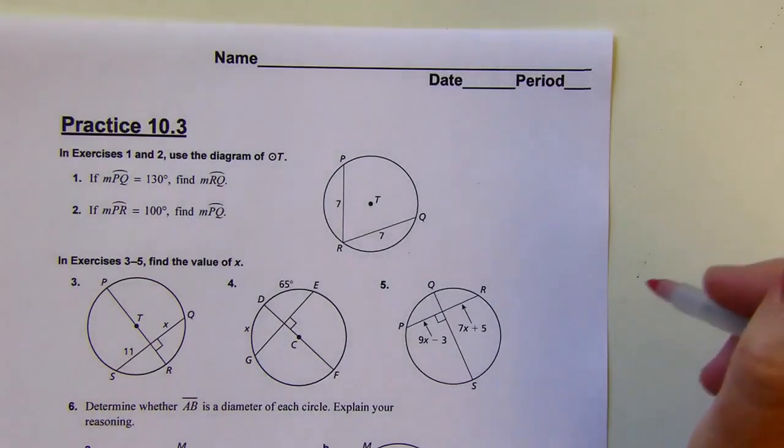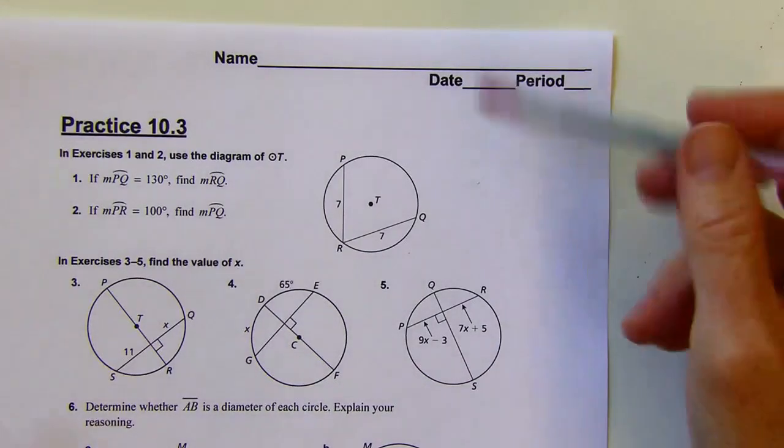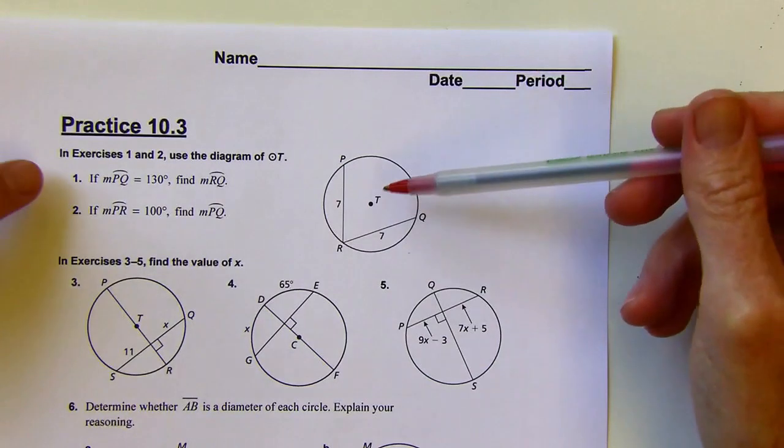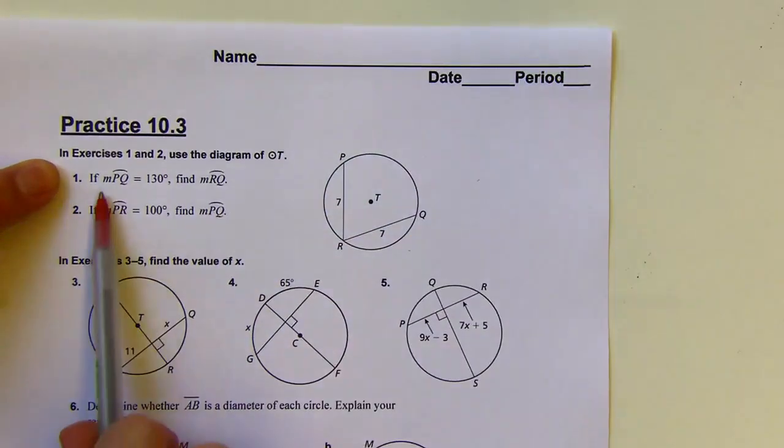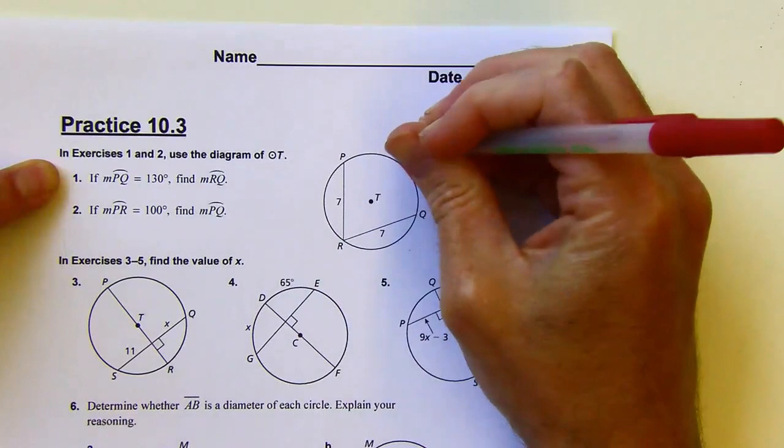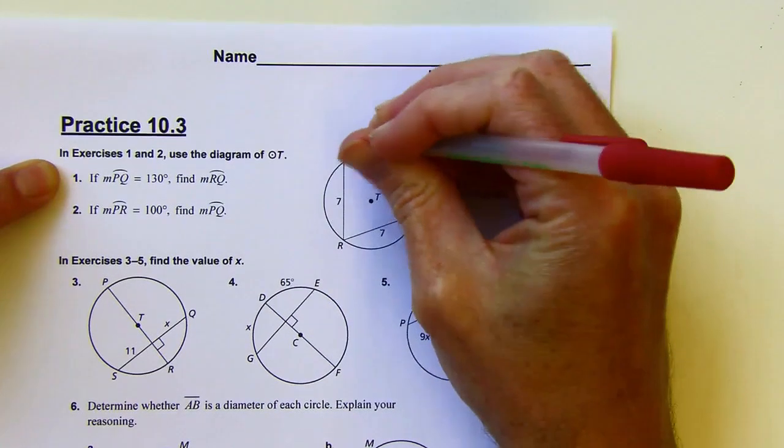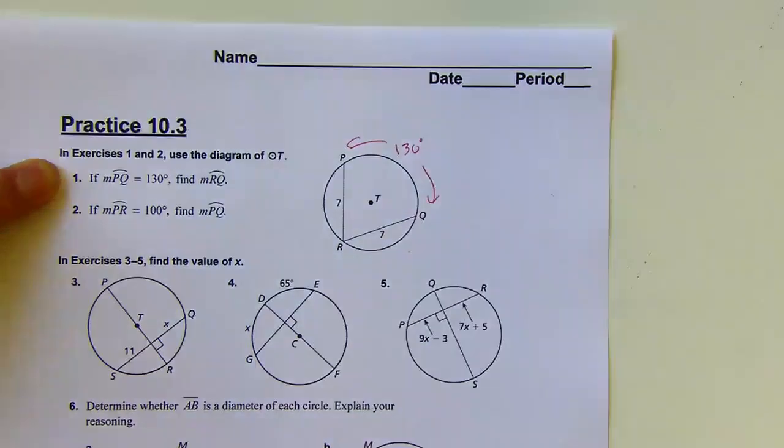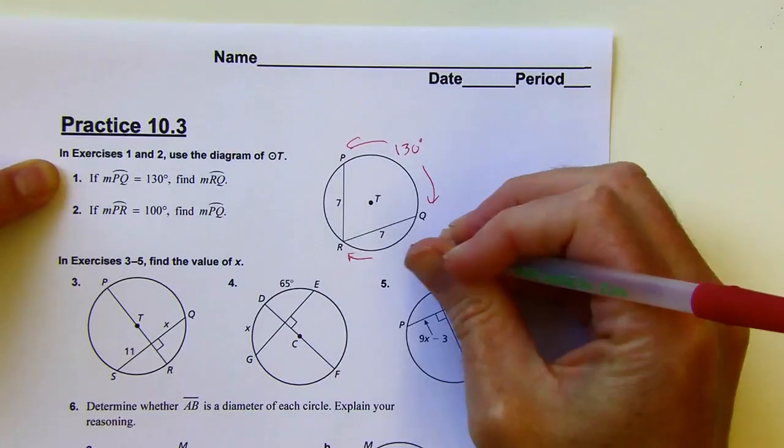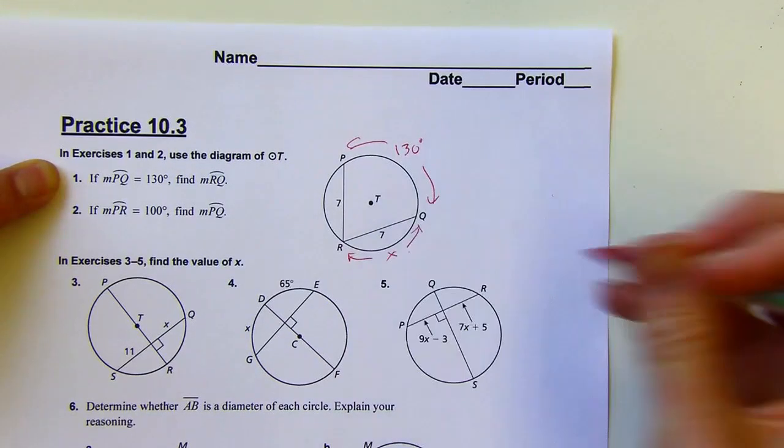Okay, practice 10.3. Alright, so the first two problems use this diagram. The first one says if the measure of arc PQ is 130 degrees, so that's this arc, then find the measure of arc RQ. So I'm supposed to find the measure of this one.